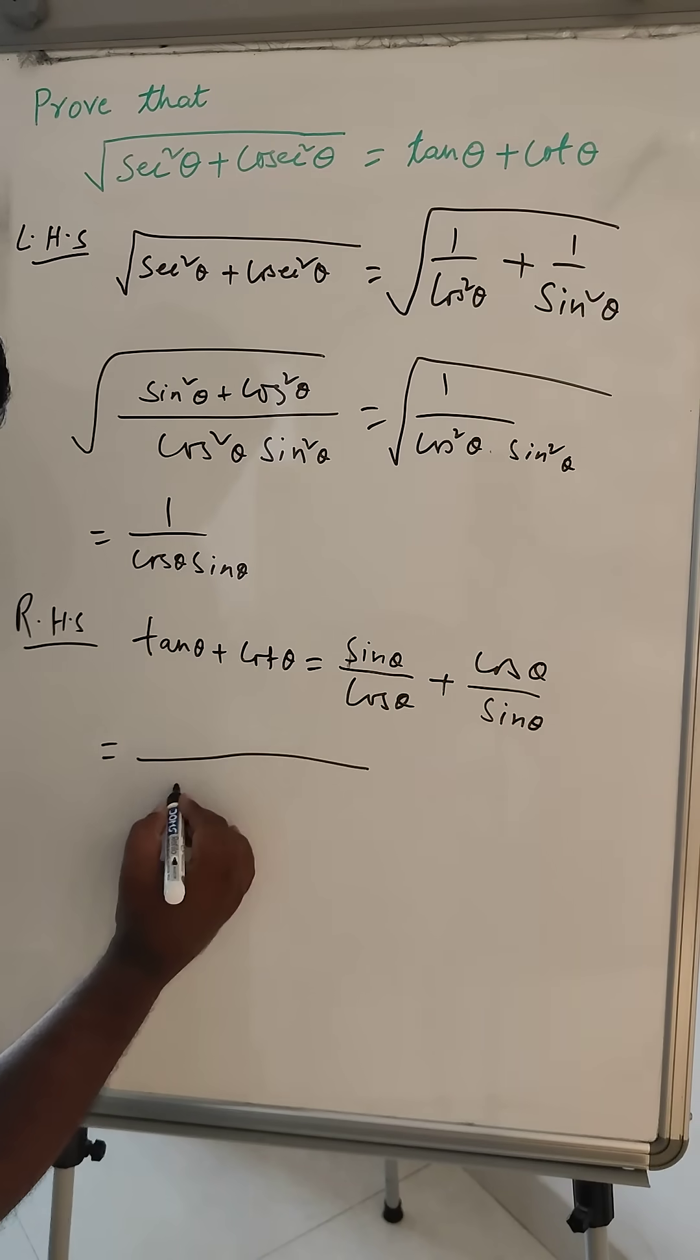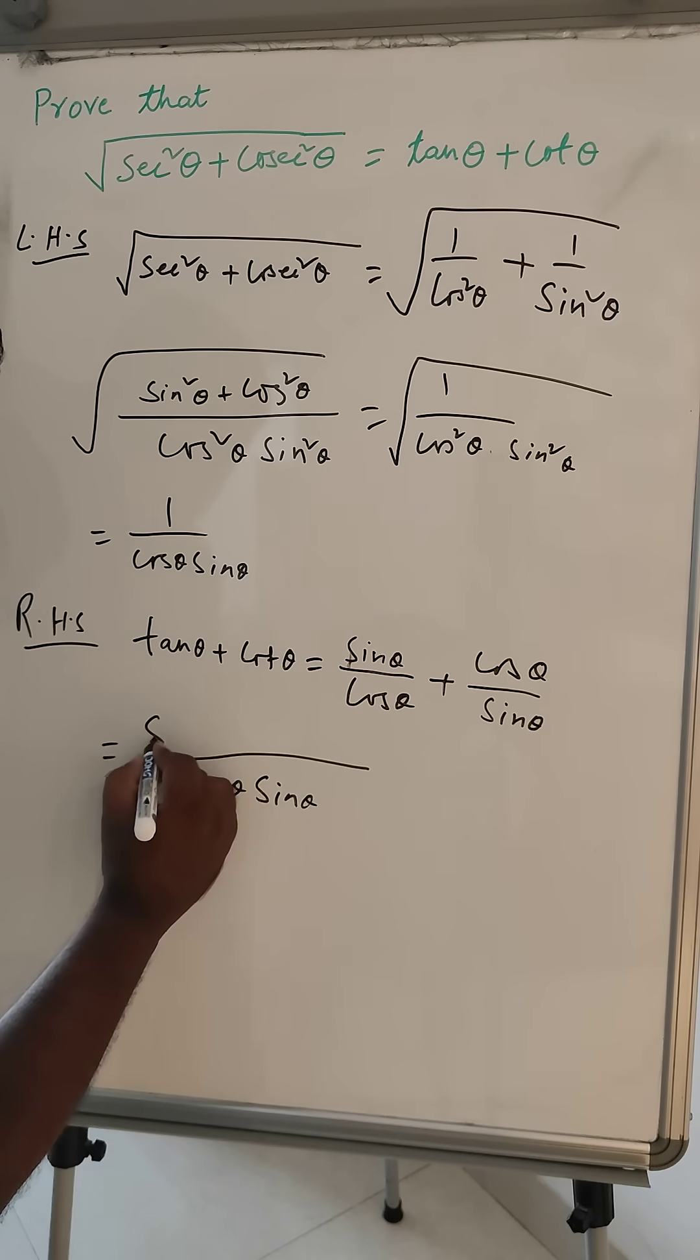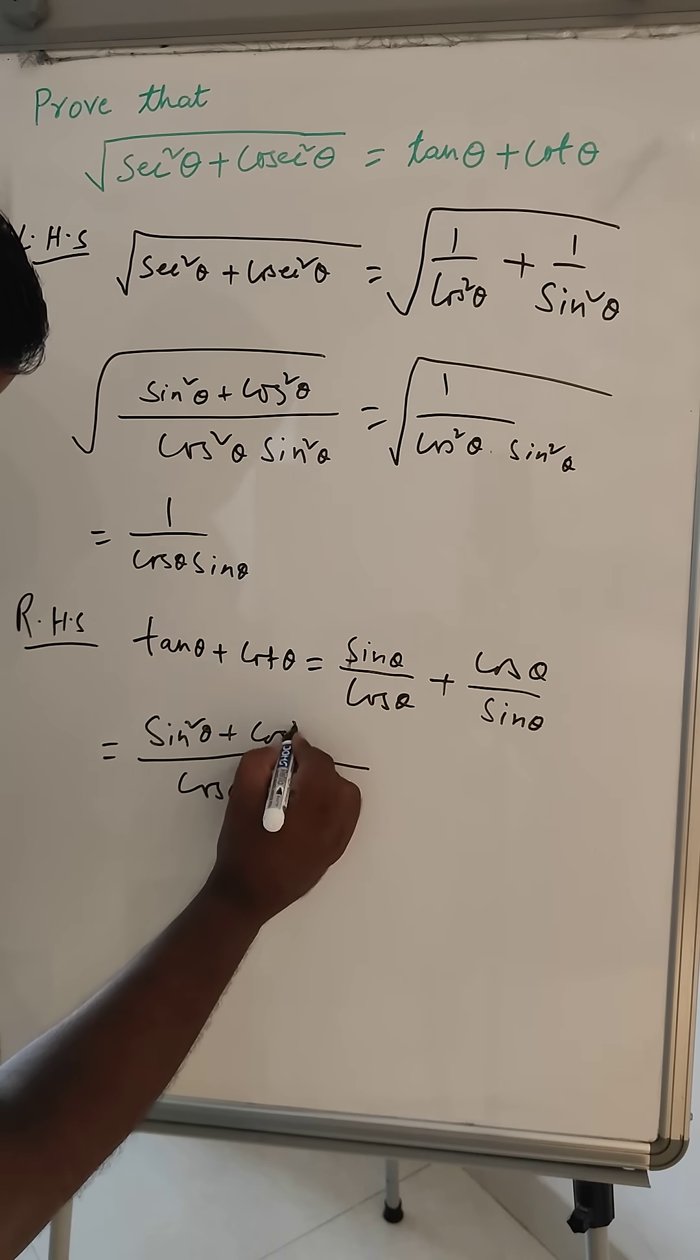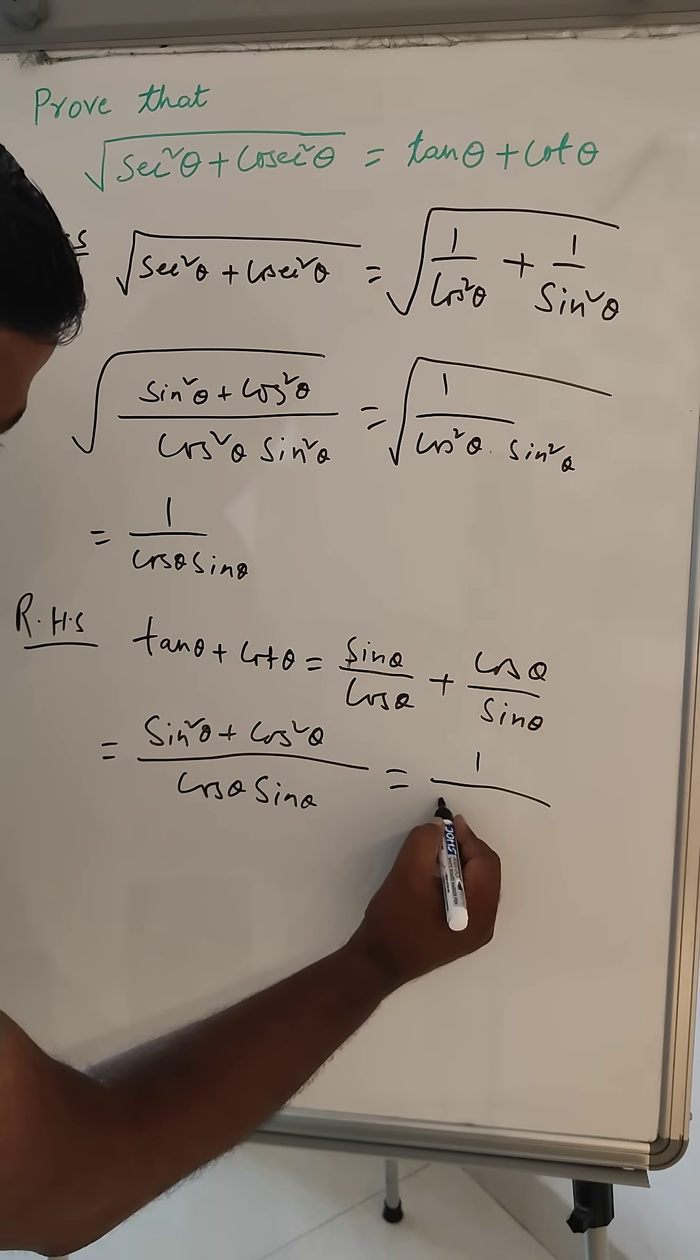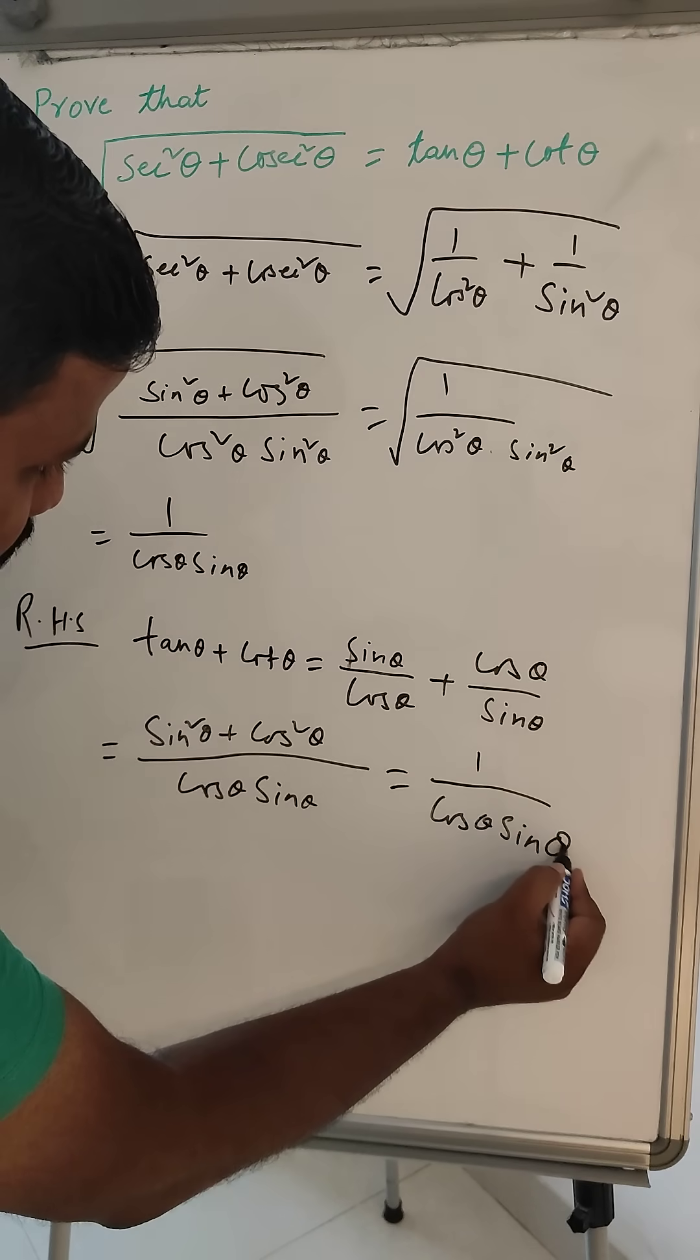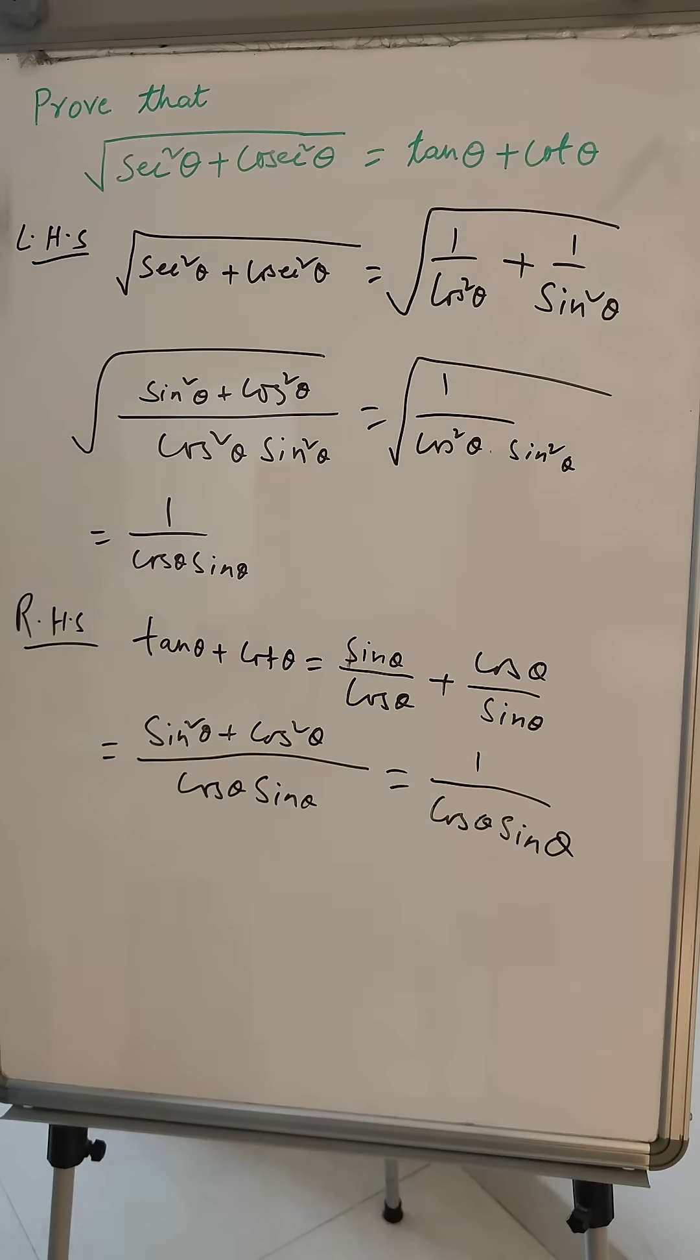We can write cos theta and sin theta plus cos square theta. So sin square theta cos theta is equal to one and here cos theta sin theta. So this value and this value same from LHS and RHS.